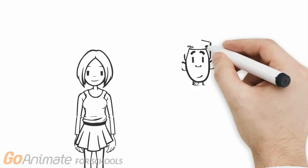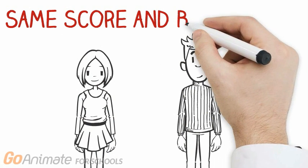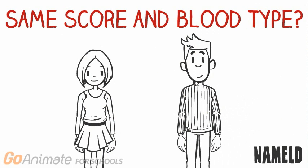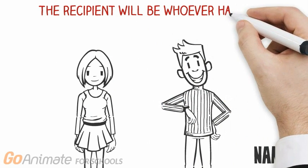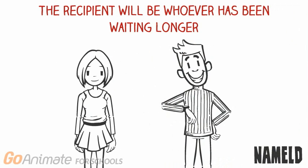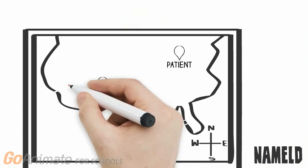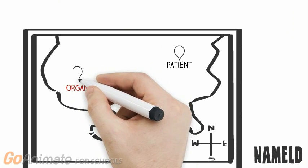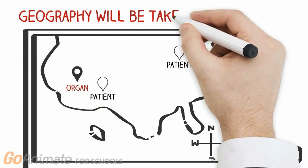Now what if after all this, two patients have the same NAMELD scores and blood type when a liver becomes available? The patient that's been waiting longer will receive the liver. Also, if patients are within 4 points of each other when a liver becomes available, geography will contribute to the decision.